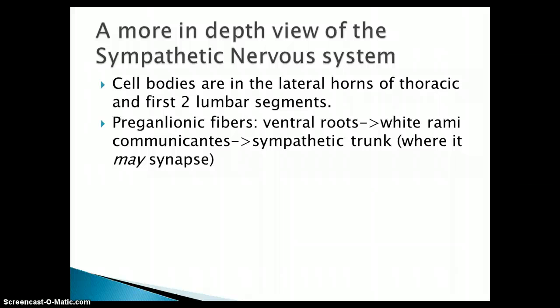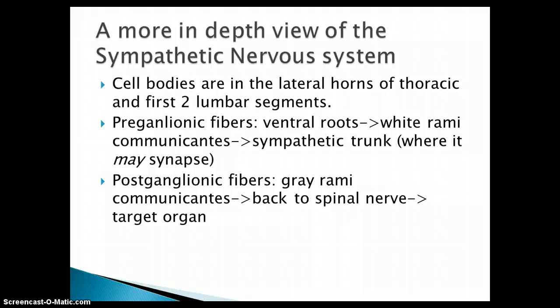The path of the preganglionic fibers goes from the lateral horns to the ventral roots, to the white rami communicantes. The white rami communicantes is basically a division of the nerve — the nerve flows through the ventral or dorsal roots and then divides into specific areas, and this area is the white rami communicantes. Then it goes to the sympathetic trunk where it may synapse — it might not, because there's also prevertebral ganglia, so it may go through a few ganglia. After synapsing, a postganglionic fiber goes to the gray rami communicantes, then back to the spinal nerve where it reaches the target organ.